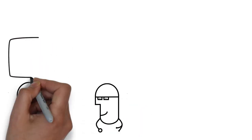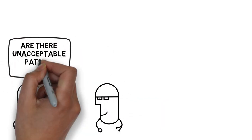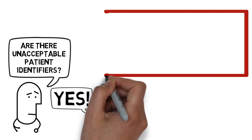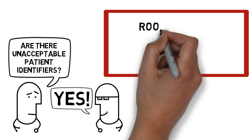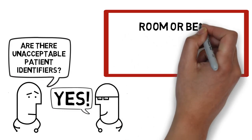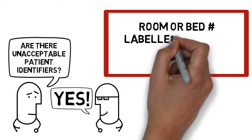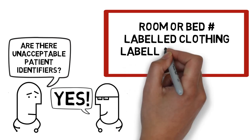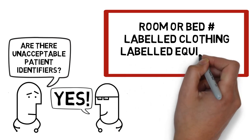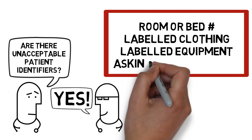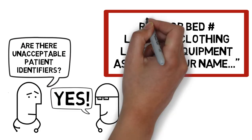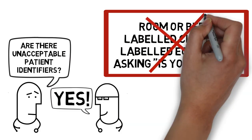Now that we've got a list of acceptable patient identifiers, you may be wondering if there are identifiers that are not acceptable. The answer is, of course, yes. Firstly, it's not acceptable to use room or bed number as a patient identifier — it's far too easy for a patient to be in the wrong place at the wrong time. Secondly, labeled clothing or equipment can easily be inadvertently used by another patient. We wouldn't want Mr. Wrong taken to the OR for a surgery he doesn't need because he borrowed Mr. Wright's housecoat. Also, we shouldn't just ask patients 'Is your name Joe Smith?' as a way of identifying, as hearing or cognitive issues can easily confuse the process.